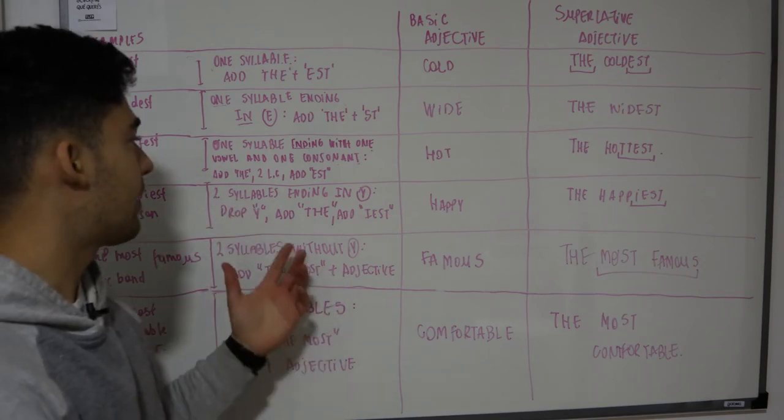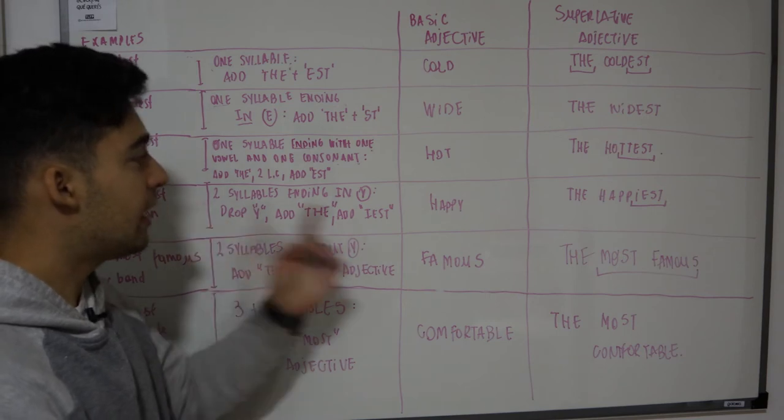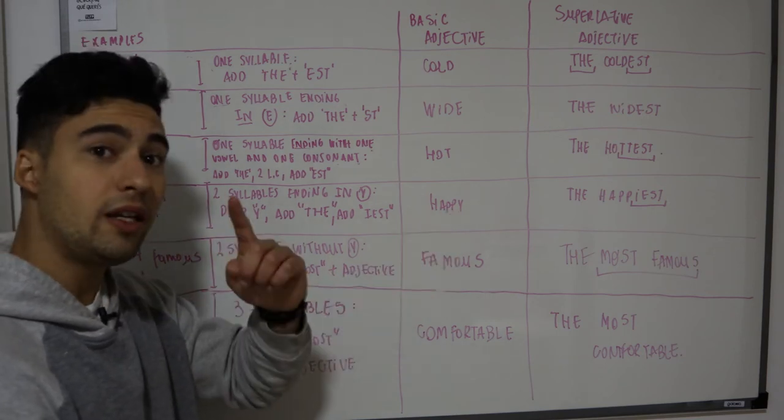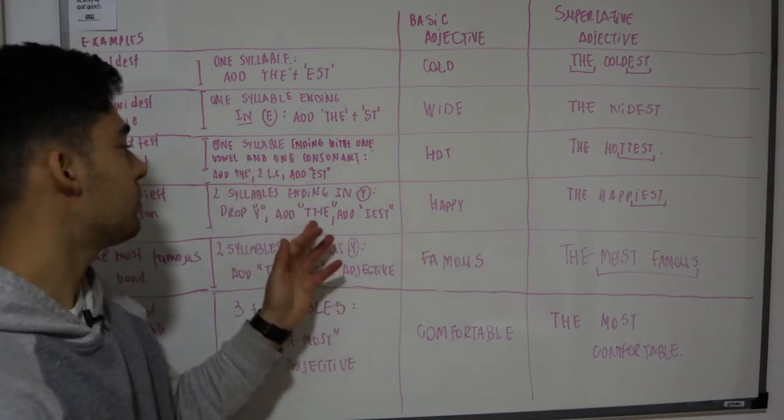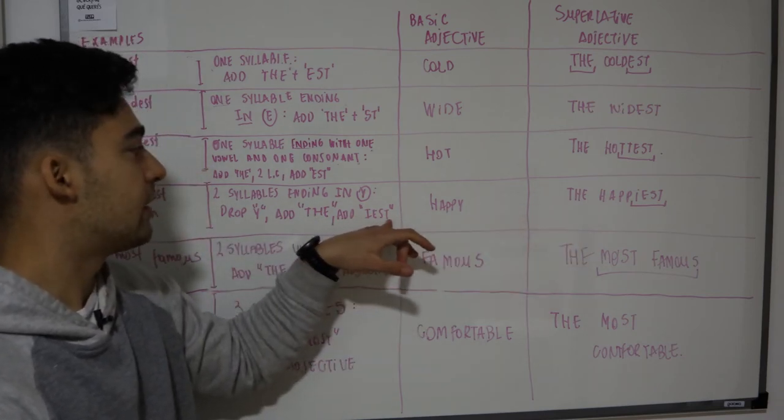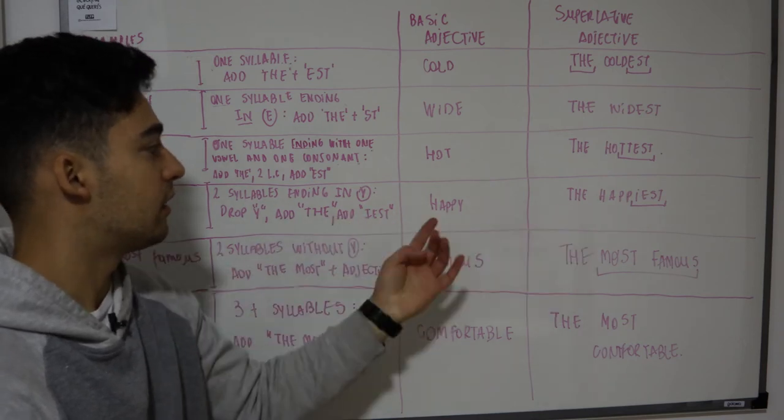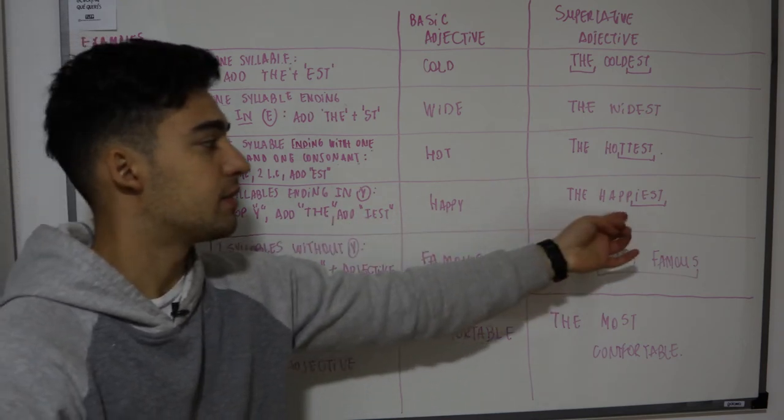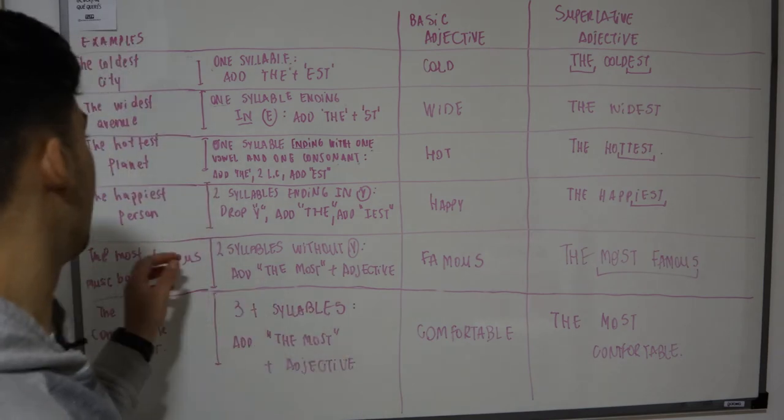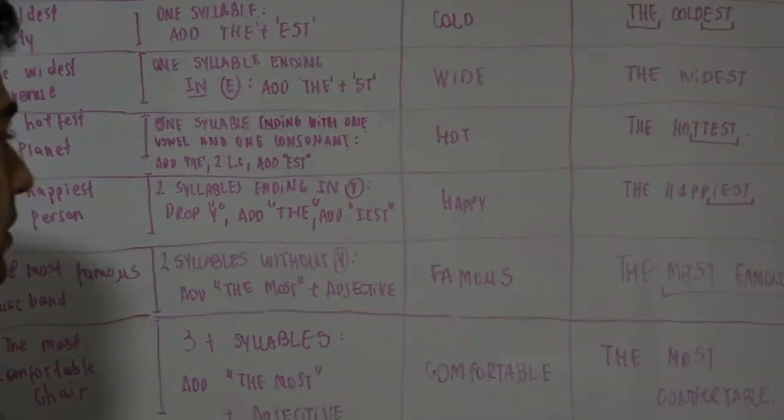Como cuarta regla tenemos palabras de dos sílabas que terminan en y. Lo que se hace es que se elimina la y. Esa y cambia por una i, de la misma manera que pasaba con los comparativos. Se agrega el the y se agrega la palabra est. Entonces la y cambia por una i latina, se agrega el the y la est. Entonces para happy tenemos the happiest. Y como ejemplo pusimos the happiest person, la persona más feliz de todas las personas.